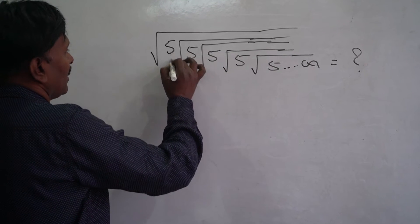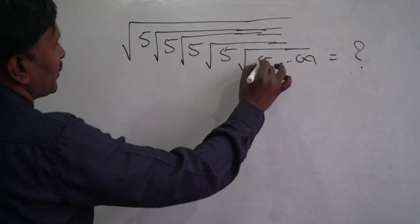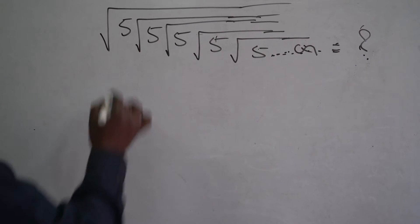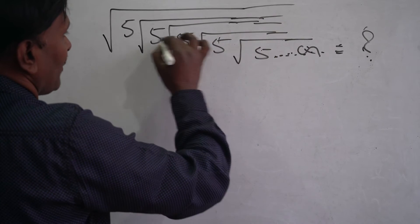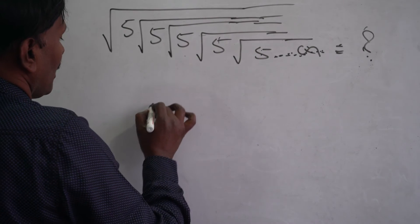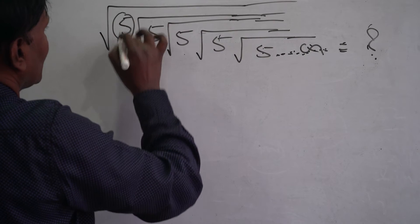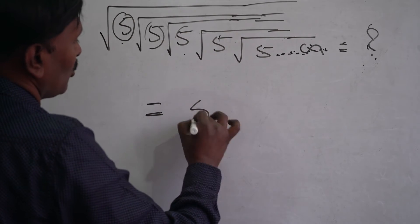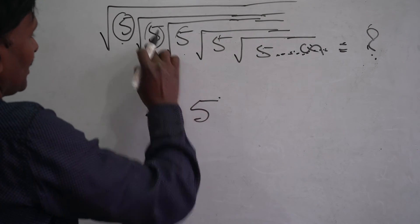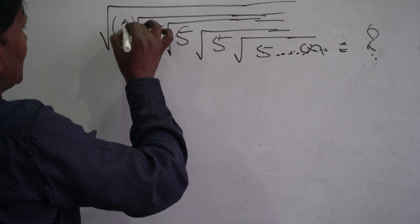The problem is like that: square root of 5, root of 5, root of 5, root of 5... and so on, going up to root 6 or 7.